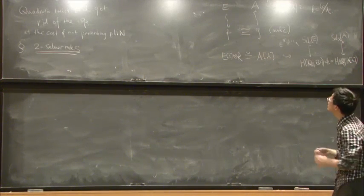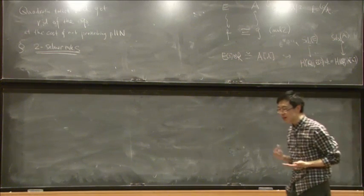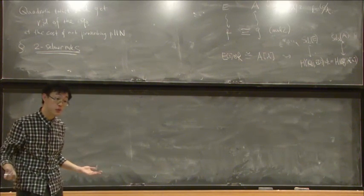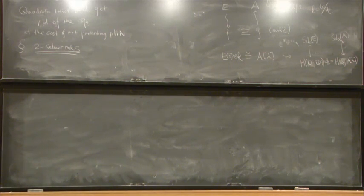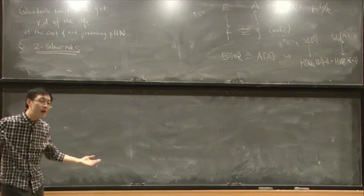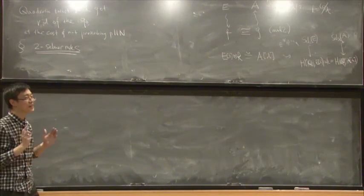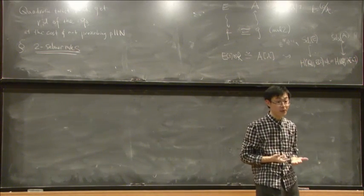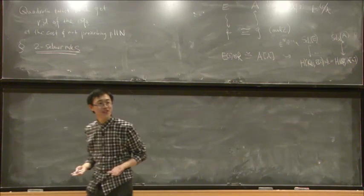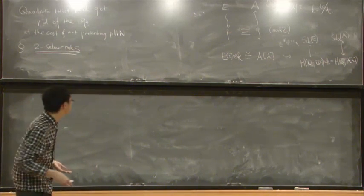By the level-raising process, one produces a whole family of modular abelian varieties sharing the same mod 2 Galois representation as the original E — by Chebotarev density there are infinitely many level-raising primes, and by the simultaneous level-raising theorem one can level-raise at arbitrarily many of them. One can then ask: how does the 2-Selmer rank vary in this family? Can it take arbitrarily large values? Arbitrarily small values? What values can it take?